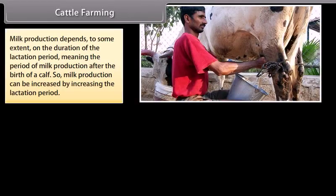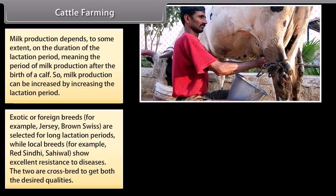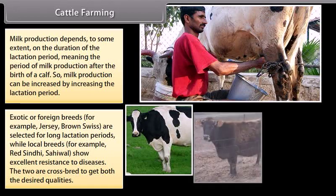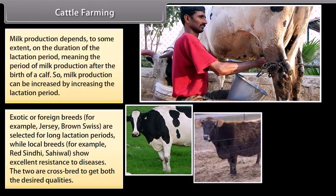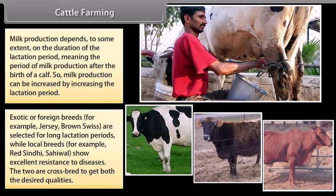Milk production depends to some extent on the duration of the lactation period, meaning the period of milk production after the birth of a calf, so milk production can be increased by increasing the lactation period. Exotic or foreign breeds, for example Jersey and Brown Swiss, are selected for long lactation periods, while local breeds, for example Red Sindhi and Sahiwal, show excellent resistance to diseases. The two are cross-bred to get both the desired qualities.